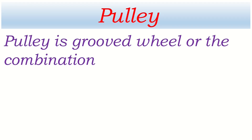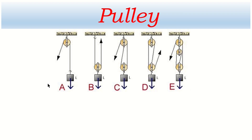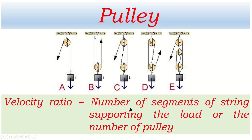Let's go to pulley. What is a pulley? A pulley is a grooved wheel, or a combination of grooved wheels, in which a rope or string is used to raise a heavy load. This is the diagram of pulley — pulley is of different types, that's why I am showing different diagrams. The velocity ratio of a pulley system is the number of segments of the string supporting the load, or the number of pulleys. In this case, only one segment of the string is supporting the load, that's why its velocity ratio is 1.